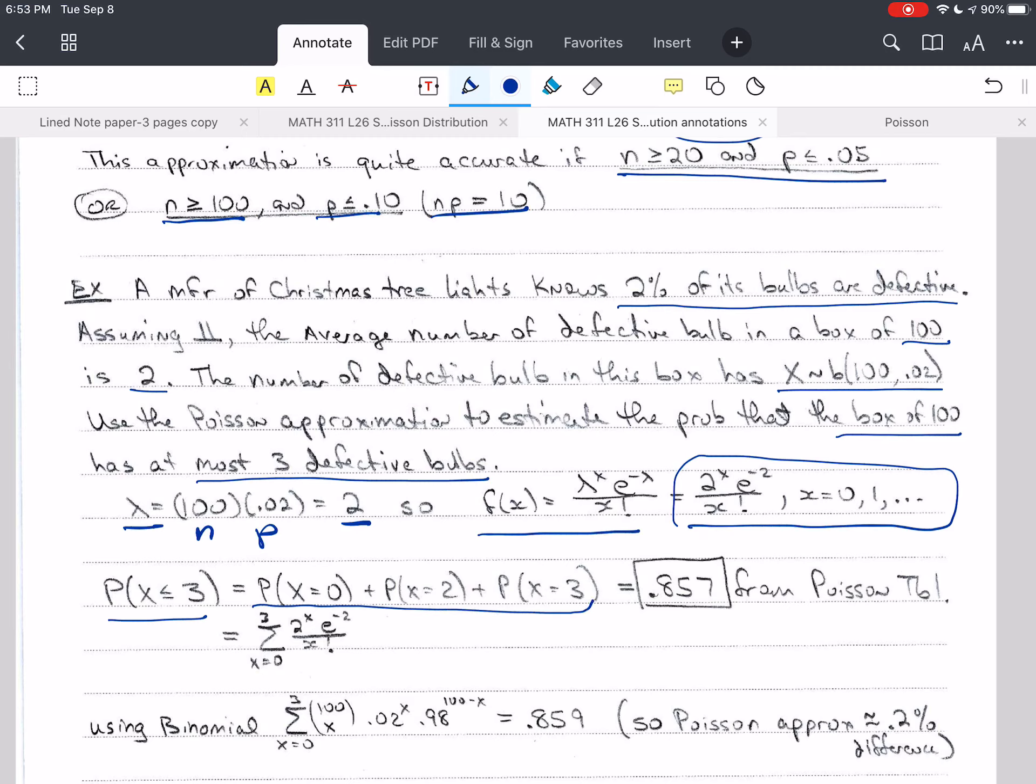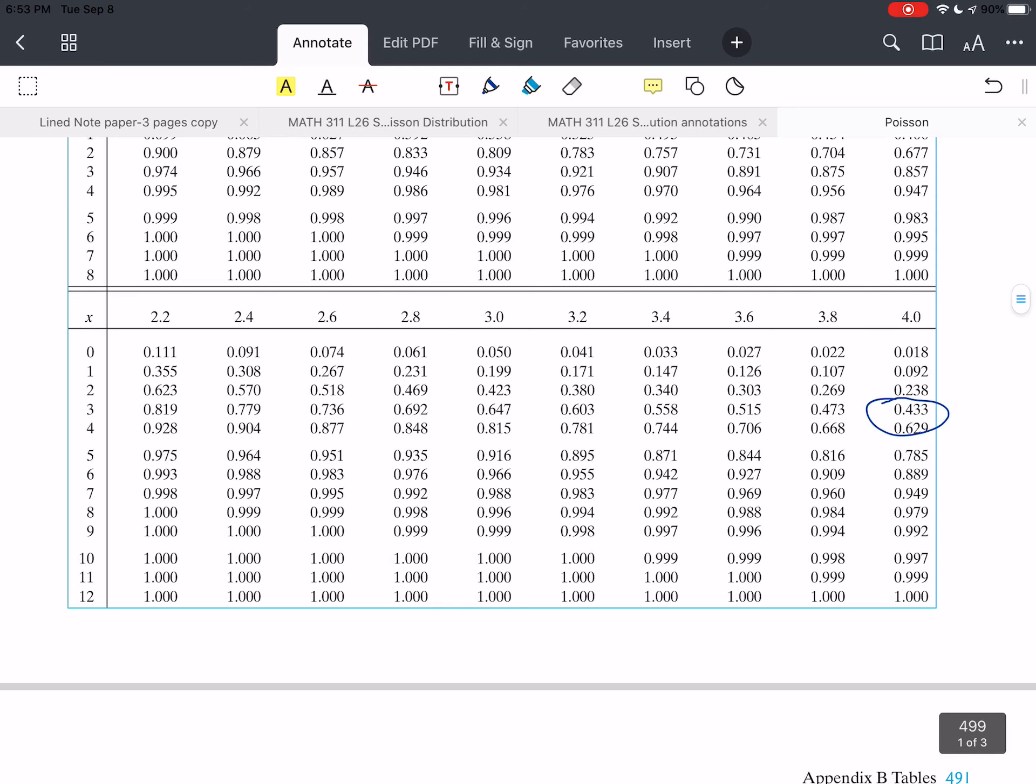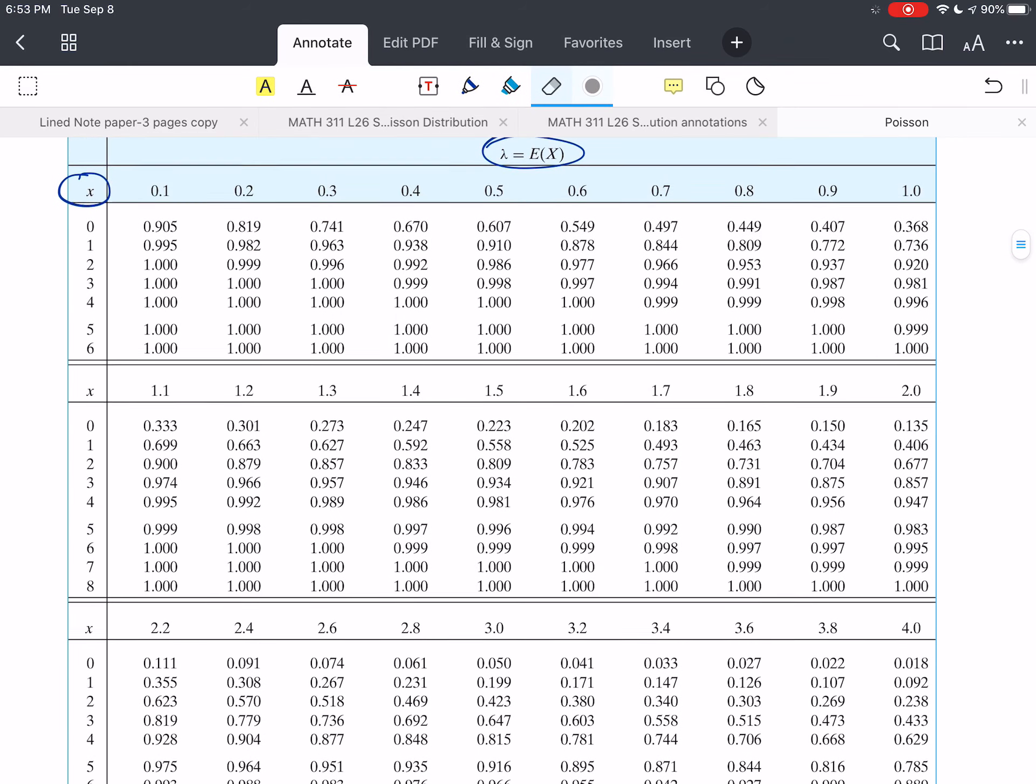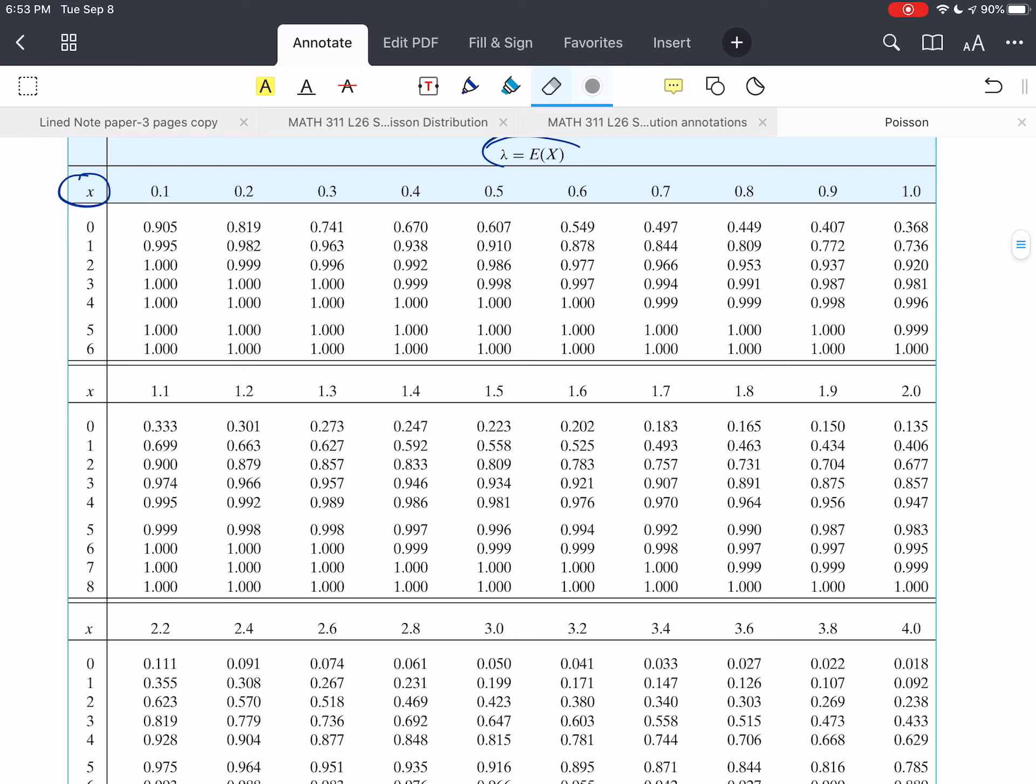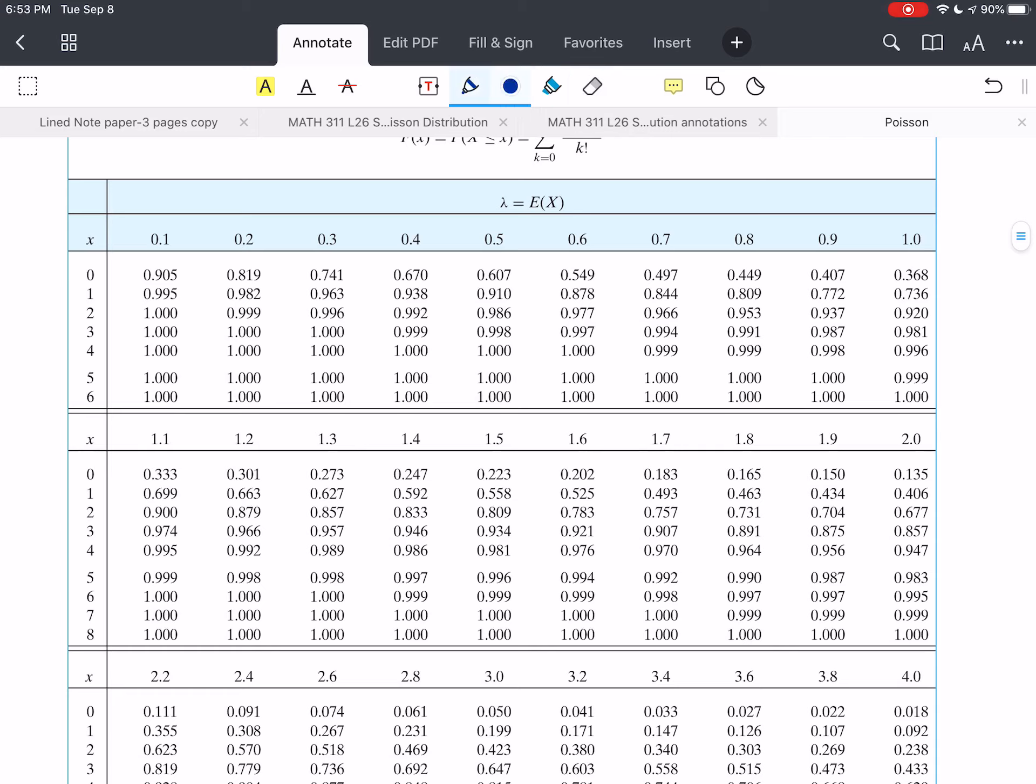Lambda is 2, and X is 3. Lambda is 2. Let me get rid of that. Lambda is 2, and X is 3. Lambda is 2, X is 3. 0, 1, 2, 3, 8, 5, 7. 0.857 is the probability.